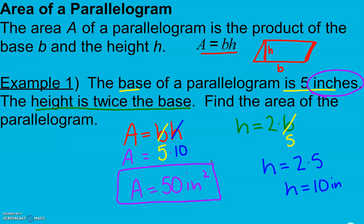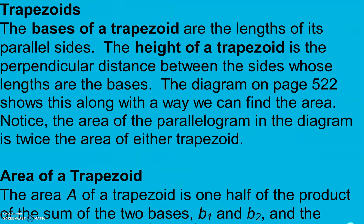When we do problems like these, there are four things you need in order to get all your points: write down your formula, plug in your values, give the answer, and give the correct label. Those four things we need every time.